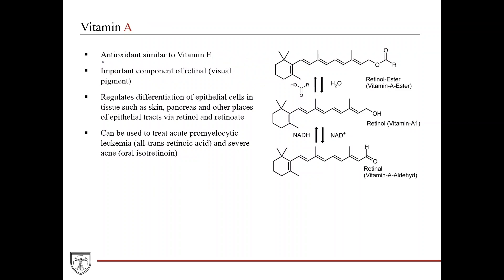Vitamin A is an antioxidant similar to vitamin E. When ingested as the retinol ester, it gets converted in the small intestine into retinol, which can serve as a storage form, and eventually into retinal, the visually active form. Vitamin A is an important component of visual pigment and is critical for retinal function. It also regulates differentiation of epithelial cells in tissues such as skin and pancreas. Therapeutically, it can treat acute promyelocytic leukemia via all-trans retinoic acid.